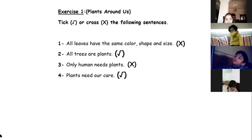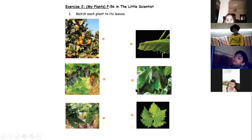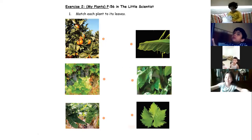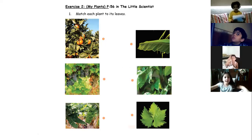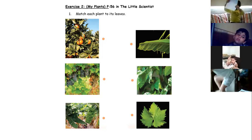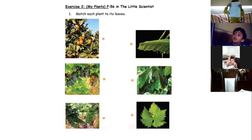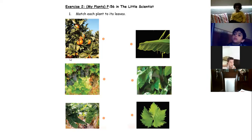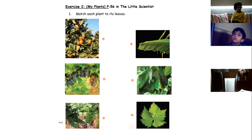Now let's move on to the second page, which is in your science book. Open your science book to page 56. Here, what should we do? We have some plants and we have to match them to their leaves. We have to take a close look at the plant and imagine the leaf and match it. Siraj, what can you tell me about the first plant?